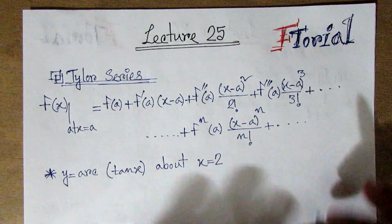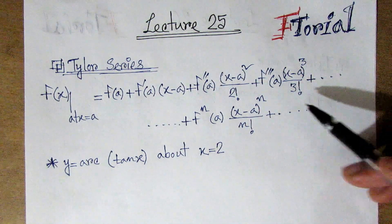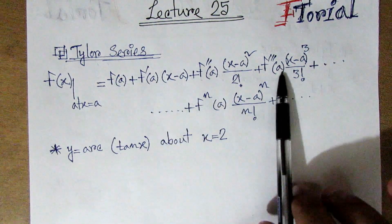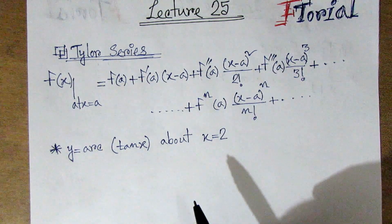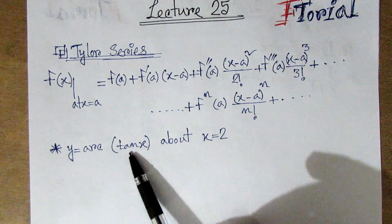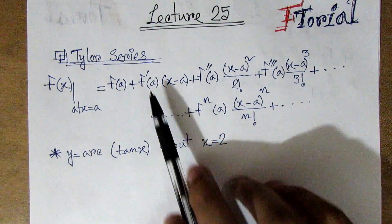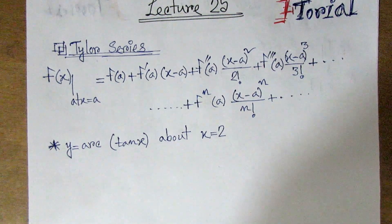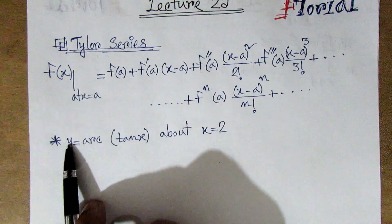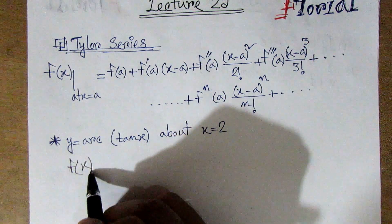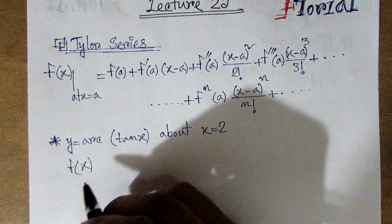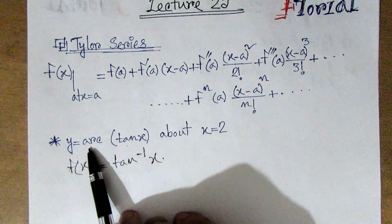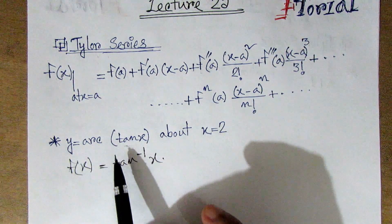So besides that, we have our system. We have x equal to a. So this is a value and we can do math. So y is equal to tan inverse x, so x is equal to tan inverse x.